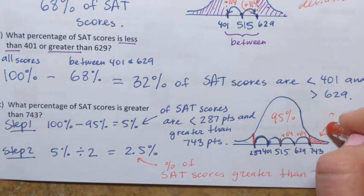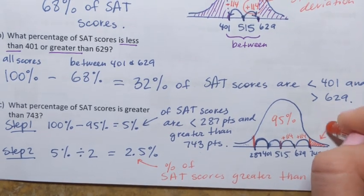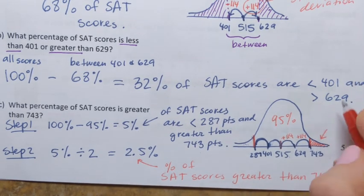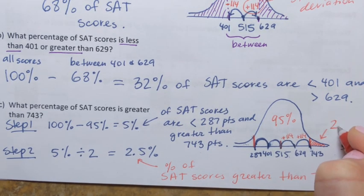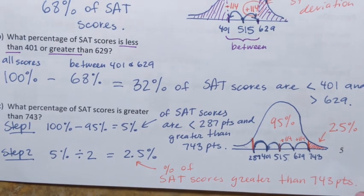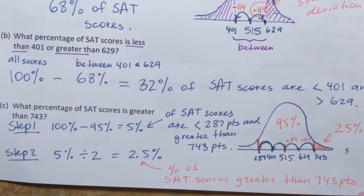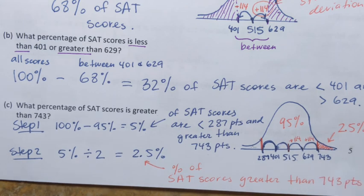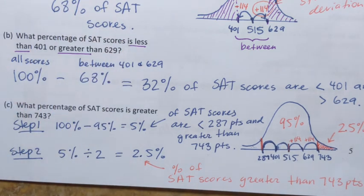So I can replace the question mark with 2.5%. That's the idea for using the empirical rule to answer questions like these about a distribution.